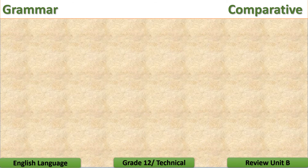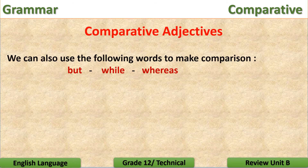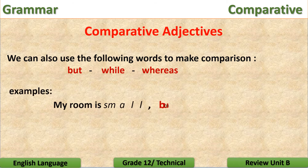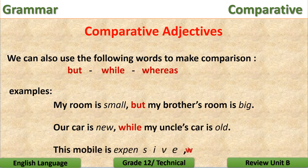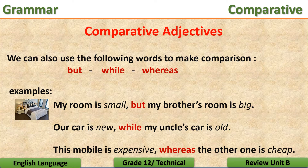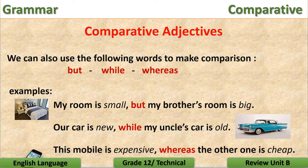Another way for making comparison is by using the following words: but, while, and whereas. Like in the examples: My room is small, but my brother's room is big. Our car is new, while my uncle's car is old. This mobile is expensive, whereas the other one is cheap.